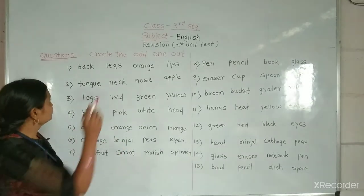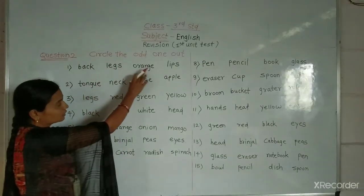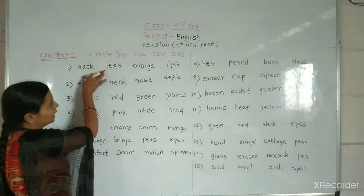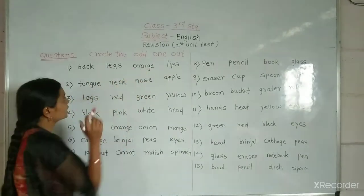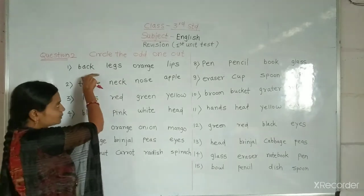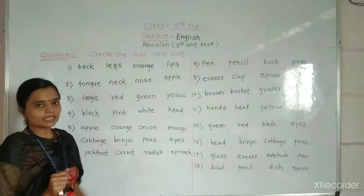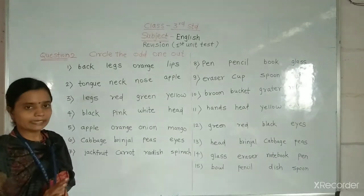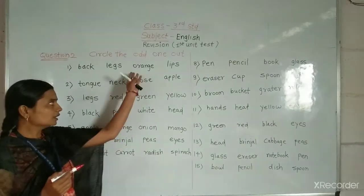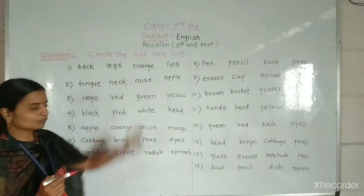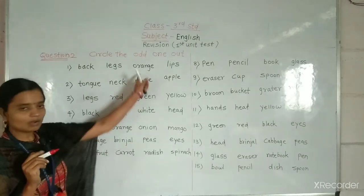First question is that back, legs, orange, lips. Back, legs, orange, lips. And this is the parts of the body. Back means part, legs means spine, lips means out. But orange is not part of body. Orange is part of the fruit. Orange means it is the name of fruit. So odd one word is orange.